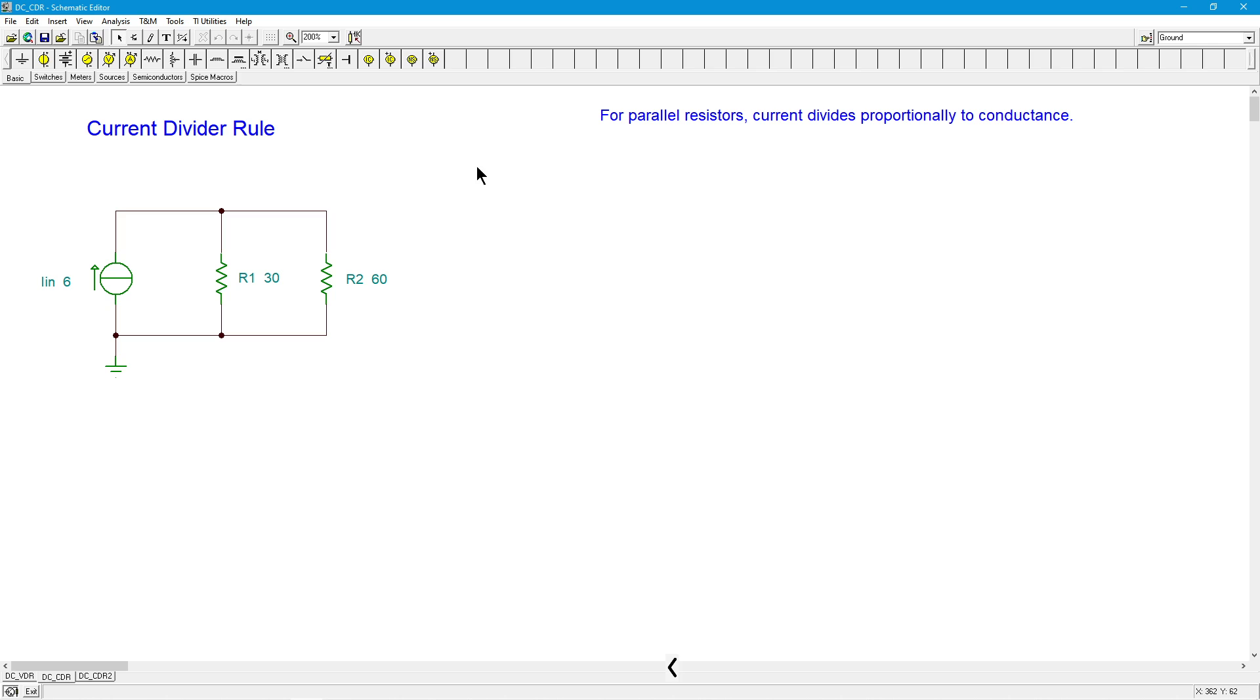But current divider rule is going to do the same kind of thing that we did with voltage divider rule. We're going to essentially skip a step. And the key here is that for parallel resistors, you've got a whole bunch of parallel resistors, current divides proportionally to the conductance, not the resistance. So the resistors with high conductance get the large current. The other way of saying that, of course, is high conductance means low resistance. So low resistance, like this 30 compared to the 60, this should get more current than the larger resistance value.